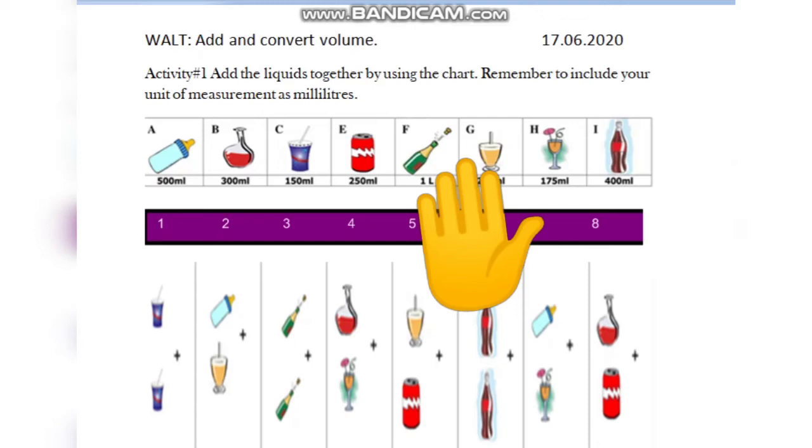Hi and welcome to this lesson on add and convert volume. Today in activity one we have added the liquids together by using the chart, and remember to include your unit of measurement as milliliters. You'll remember that 1000 milliliters is equal to one liter.